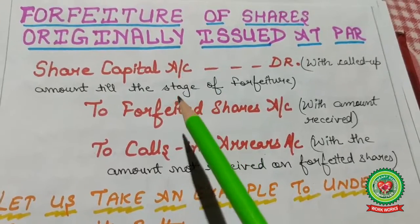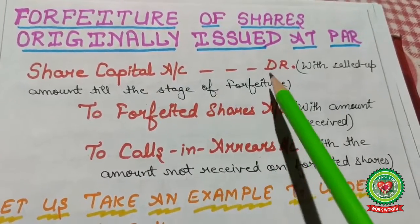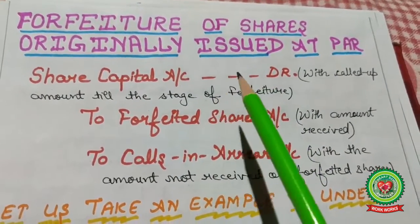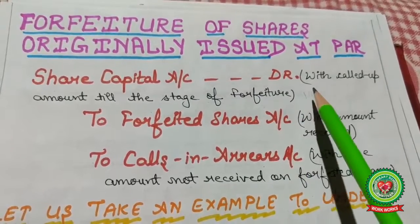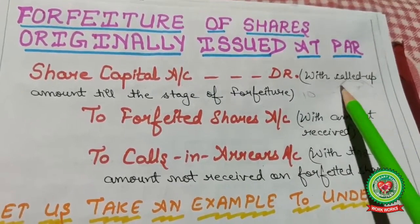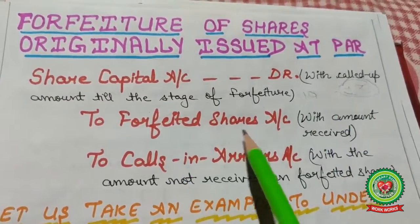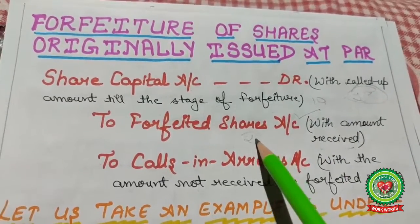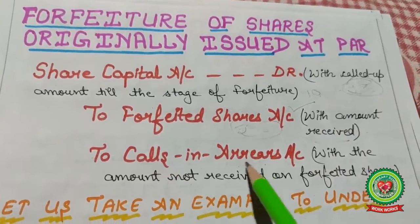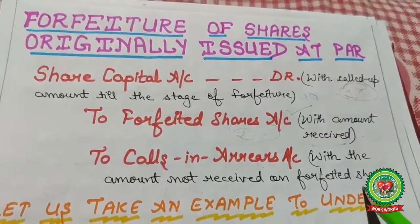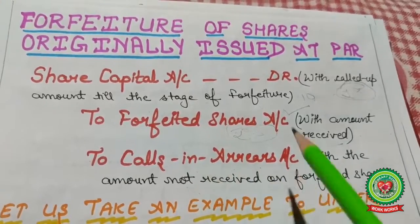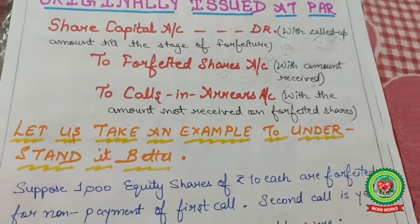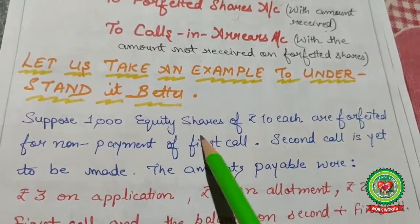Forfeiture of shares originally issued at par: there is only one single journal entry. Share Capital Account is debited with the called-up amount till the stage of forfeiture. For example, if face value is Rs. 10 but only Rs. 8 was called up, consider Rs. 8. Credit Forfeited Shares Account with the amount received, and credit Calls in Arrears Account with the amount not yet received.